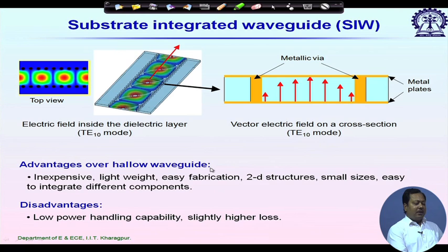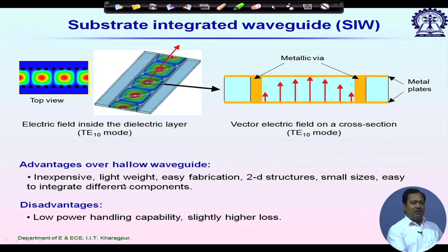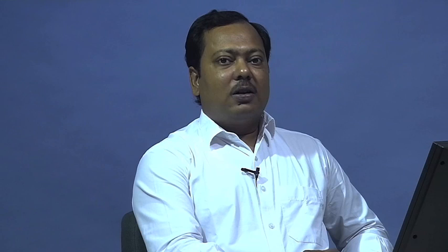The advantages of SIW over a hollow waveguide: the fabrication procedure is inexpensive using laminates. It is a low-profile, almost two-dimensional structure, making it easy to integrate different components on the same laminate or PCB. Disadvantages include lower power handling capability compared to rectangular waveguide, though higher than printed lines. It has somewhat higher loss than rectangular waveguide since we are decreasing the cross-sectional area, but this loss is lower than for printed lines.